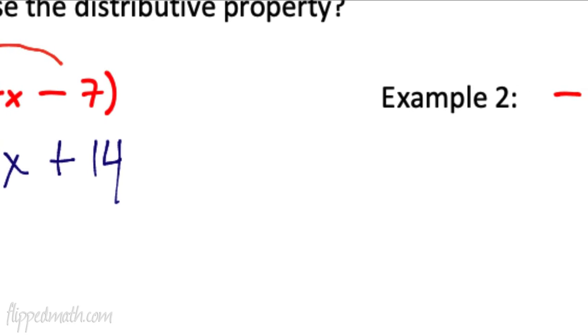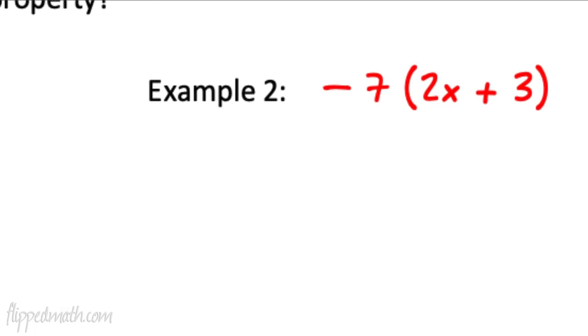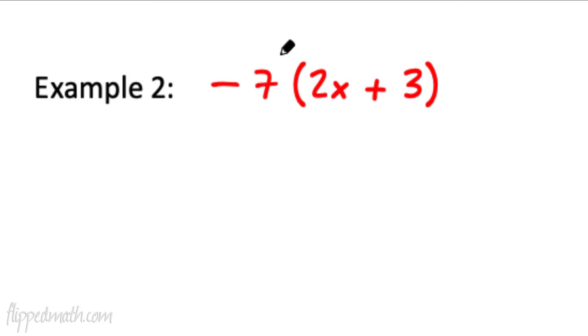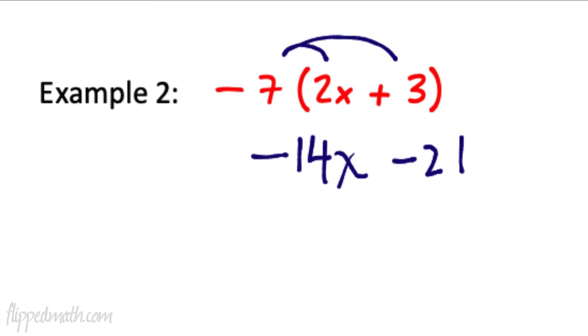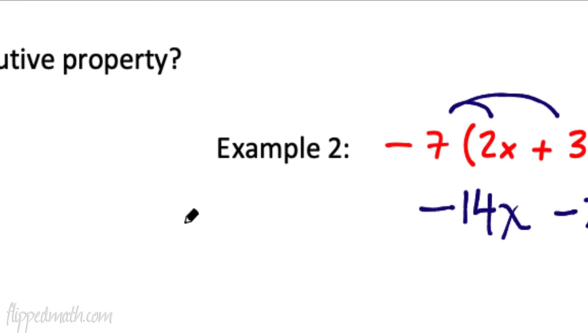Let's try example 2. Negative 7 times 2x plus 3. So we're going to use the distributive property. We're going to get negative 14x, right? Because negative 7 times 2 is negative 14. And then negative 7 times 3 is a minus 21. So those are our first two examples. That's to refresh our memory doing the distributive property, which is one of my favorite properties.